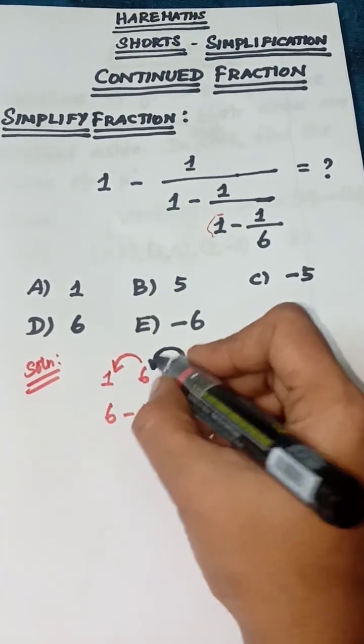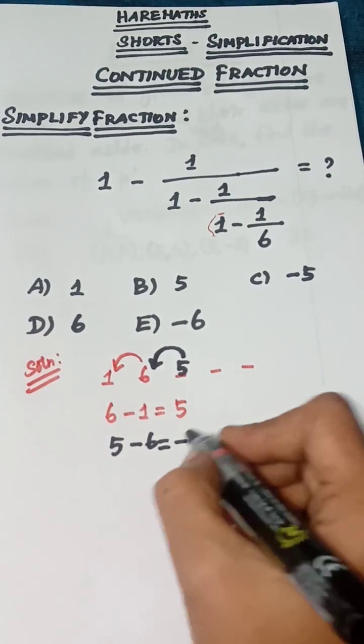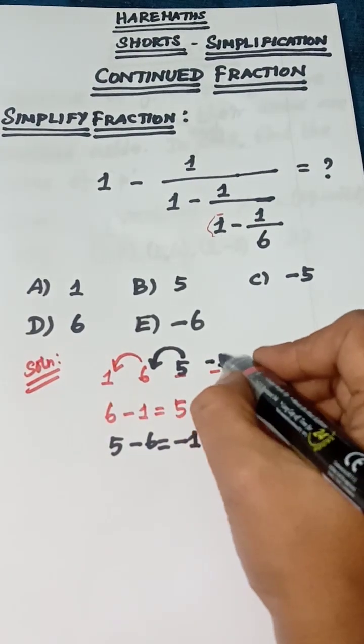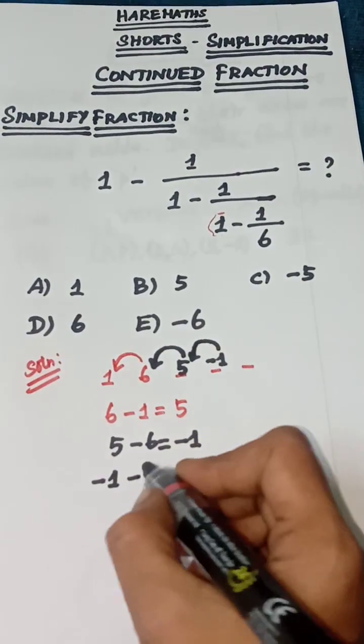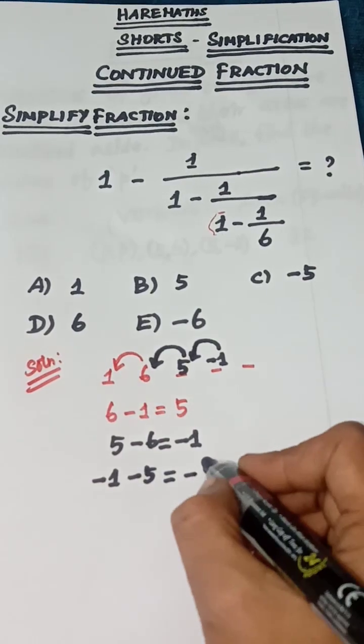Next subtract 5 minus 6 minus 1, next subtract minus 1 minus 5 equal to minus 6.